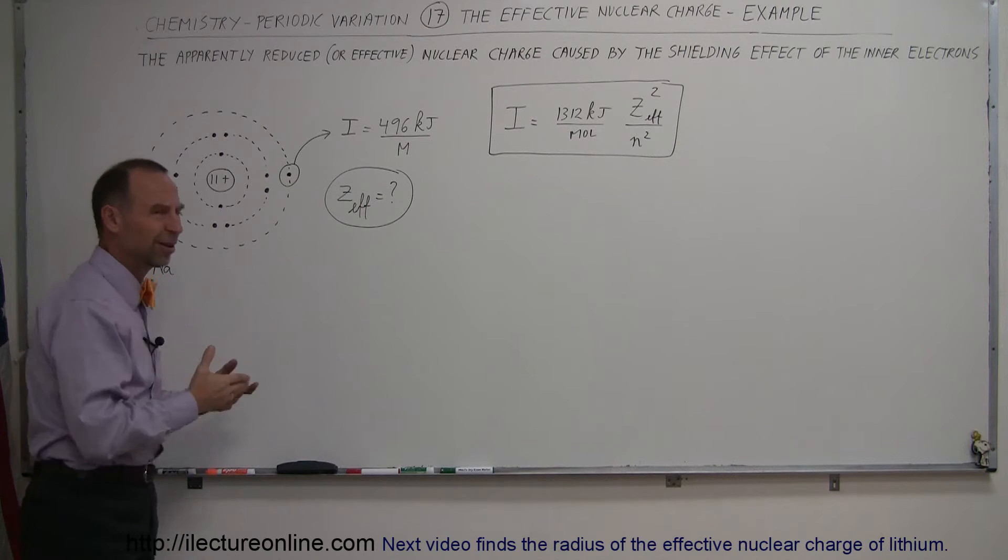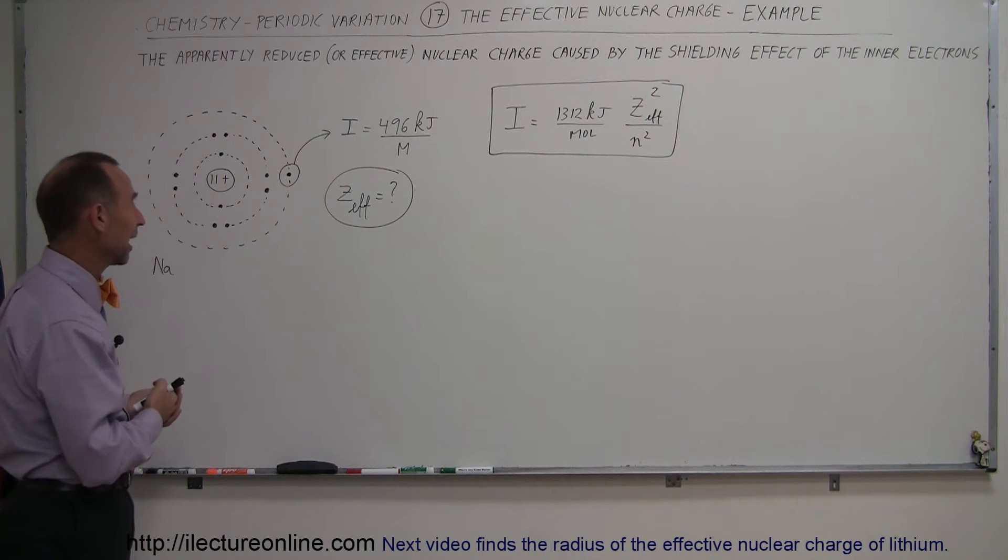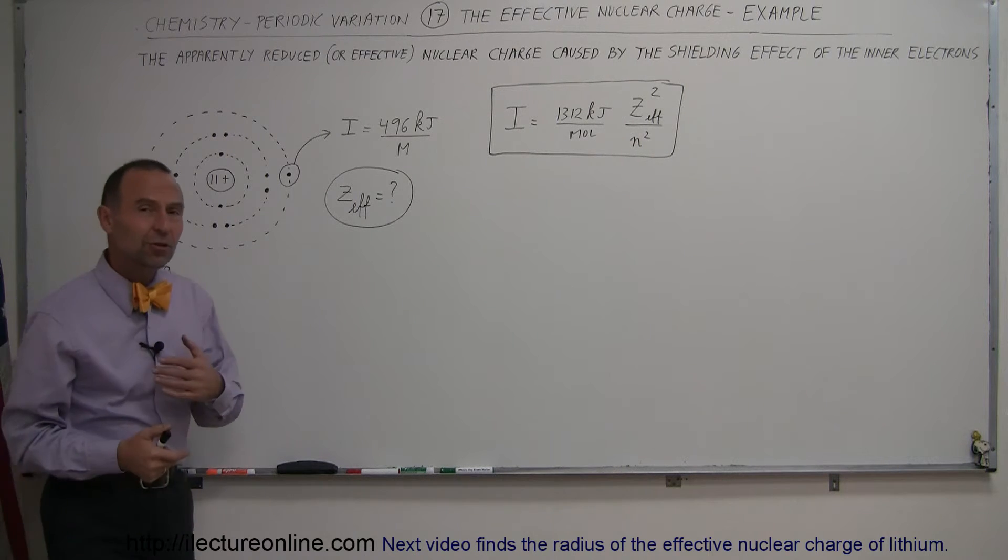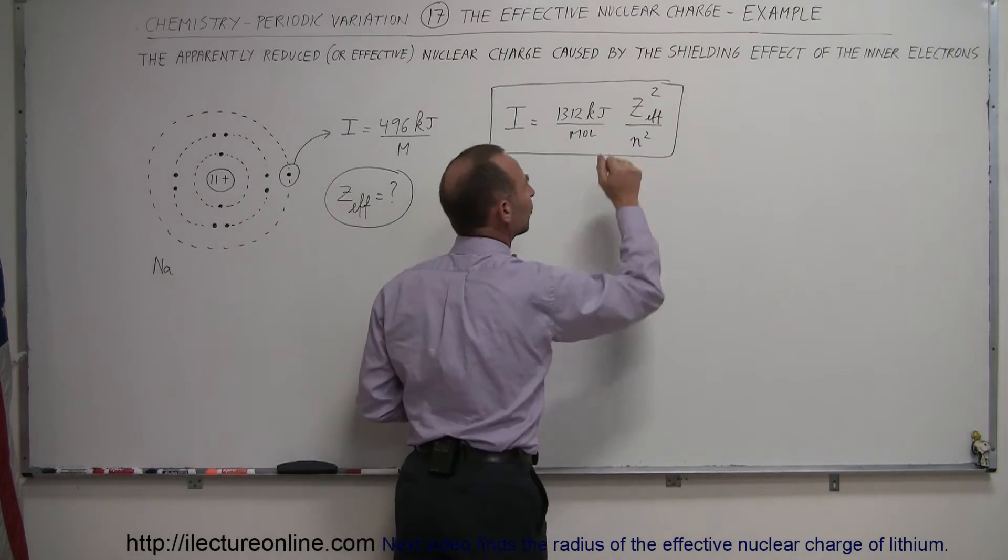Sodium with only one electron left is a very unusual case, and we're not going to see that typically in nature or even in the laboratory. So instead of using Z, the actual nuclear charge, we should be using the effective nuclear charge.